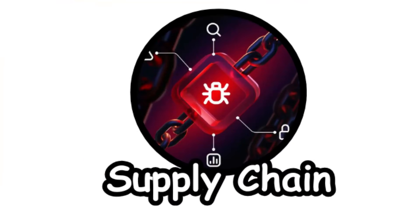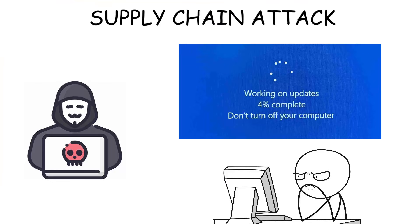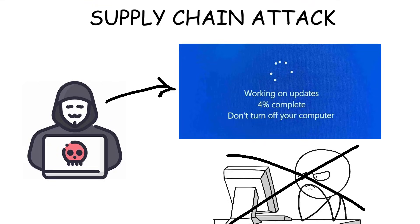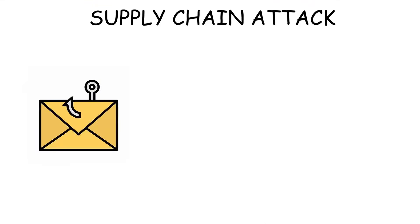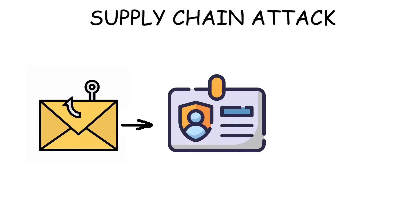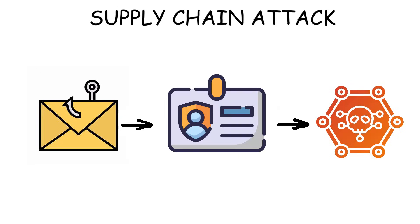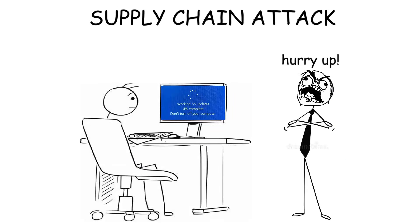Supply chain attack. A supply chain attack is when hackers target a software or operating system update instead of hacking people's devices one by one. It can involve phishing an employee at the developer's company, stealing their login credentials, and sneaking malicious code into the update. The customers — which could be businesses or even governments — won't know that the update is actually large-scale spying on their organizations.